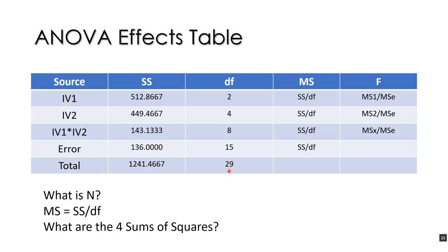So what's the n? It's 29 plus 1, which is 30. To get your mean squares, take your sum of squares — for example 512.8667 — and divide by 2, and that gives you the mean square for independent variable 1. You can calculate all four mean squares just by doing some division.